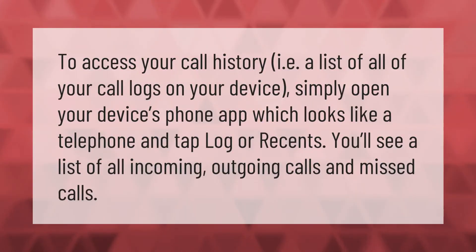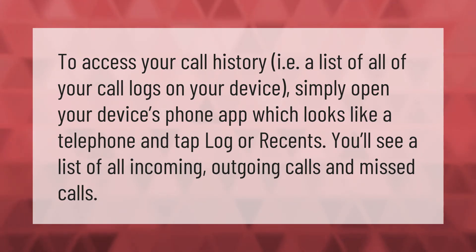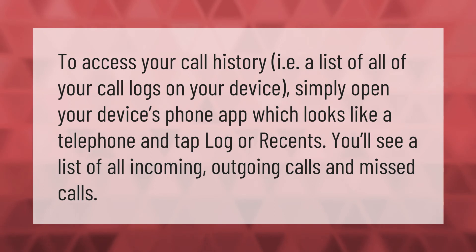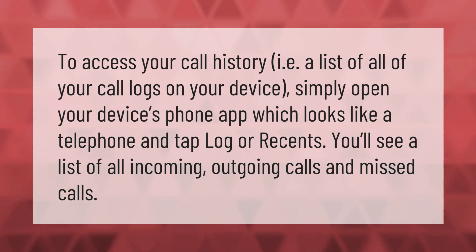To access your call history — a list of all of your call logs on your device — simply open your device's phone app, which looks like a telephone, and tap Log or Recents. You'll see a list of all incoming, outgoing, and missed calls.